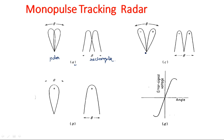In polar representation it shows two beams, and in rectangular representation it shows two waveforms. When the outputs are given to a sum and difference channel, it produces sum and difference signals. This is the sum signal in polar representation and the rectangular representation. This is the difference signal, which is the error signal - the graphical representation of how the error signal appears.